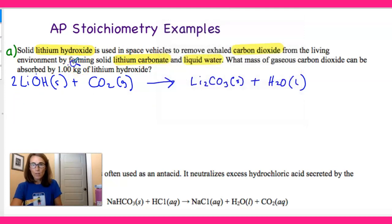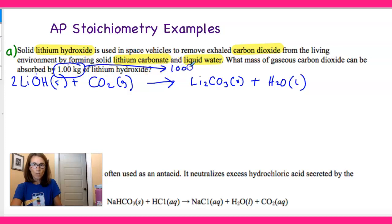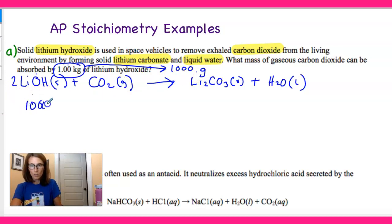We have a starting amount of one kilogram of lithium hydroxide. We want to convert that to grams first. One kilogram is simply 1000 grams. And actually this is three significant figures — when I put the decimal point there, that gives us four sig figs. So we have 1000 grams of LiOH.